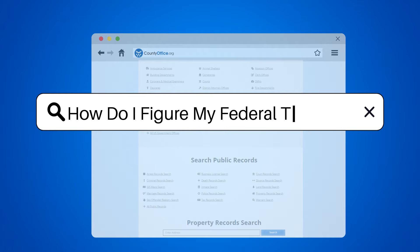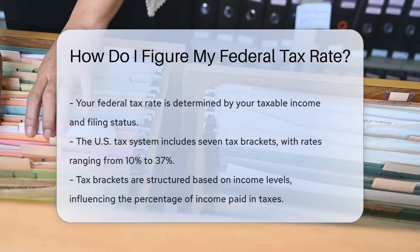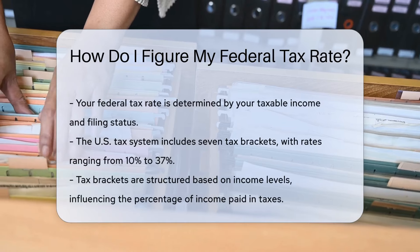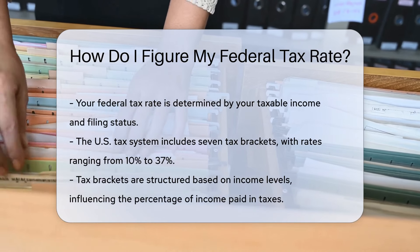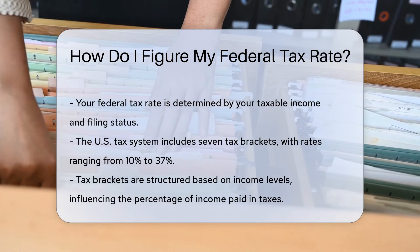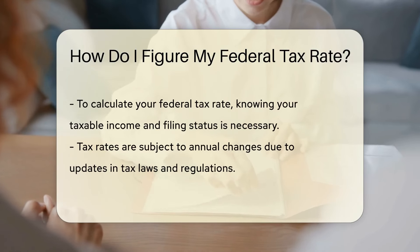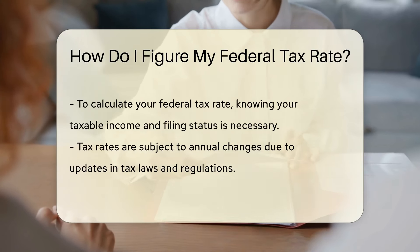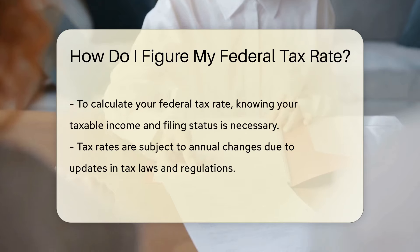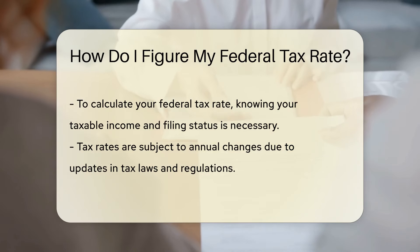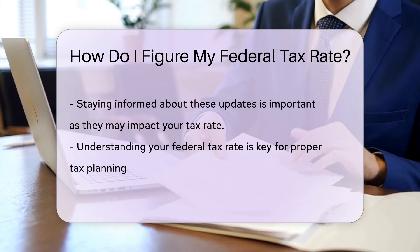How do I figure my federal tax rate? Your federal tax rate is determined by your taxable income and filing status. The U.S. tax system has seven tax brackets, ranging from 10% to 37%. Tax brackets are based on income levels, with higher brackets paying a higher percentage of income in taxes. To calculate your federal tax rate, you need to know your taxable income and filing status to determine which tax bracket you fall into.